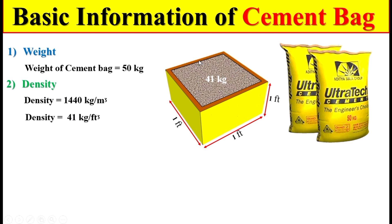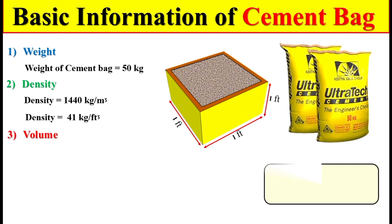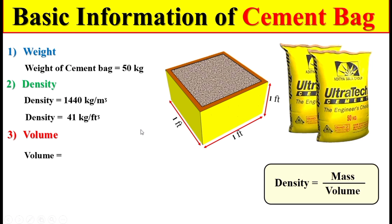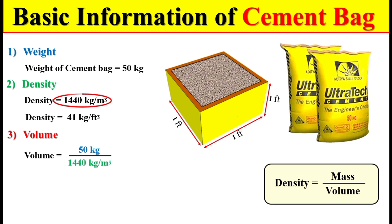Now, to calculate the total volume of one bag of cement, we use the formula: density equals mass divided by volume. So if we take the total weight of one bag of cement and divide it by the density of cement, we can get the total volume of one bag of cement in terms of cubic meters.